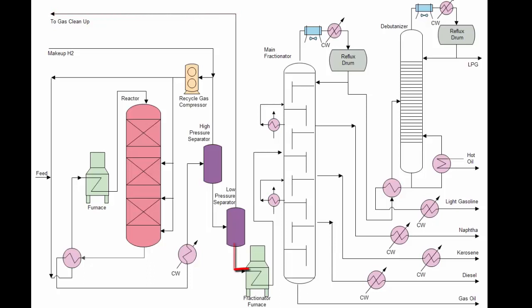Low-pressure separator liquid is reheated in a furnace before being fed to an oil fractionator, very similar to a crude unit or FCC main fractionator. The tower has separate draws for lighter gasoline, naphtha, kerosene, diesel, and bottoms. In addition, there are multiple pump-arounds to remove heat at various temperature levels.